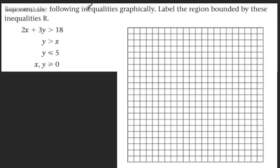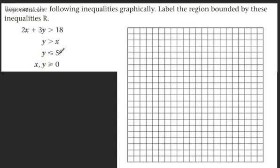We're asked to represent the following inequalities graphically and to label the region bounded by these inequalities R. These might be the constraints of a linear programming problem. The first one is a strict inequality: 2x plus 3y is strictly greater than 18, so we can't include the boundary — we use a broken line. The next one, y is strictly greater than x — again, a broken line. Then y is less than or equal to 5, which uses a solid line. And x and y are both greater than or equal to 0.